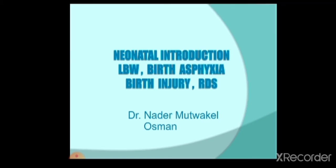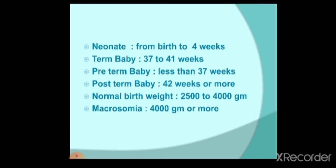First of all we have to know the meaning of neonate. A neonate is any baby born from birth up to four weeks of age. A term baby is any baby delivered after 37 weeks of pregnancy up to 41 weeks. A preterm baby is any baby less than 37 weeks. A post-term baby is any baby born after 42 weeks or more.